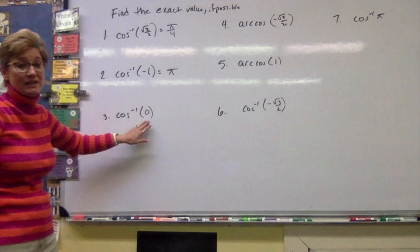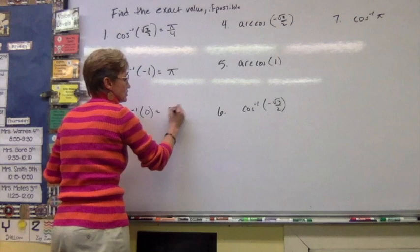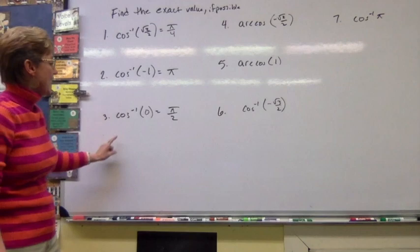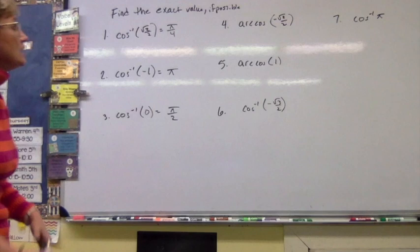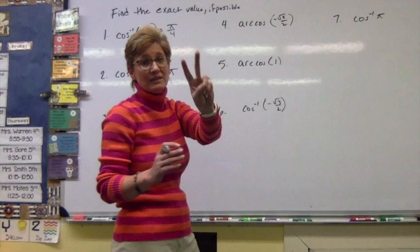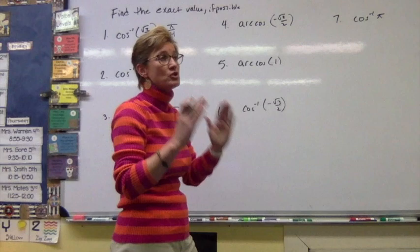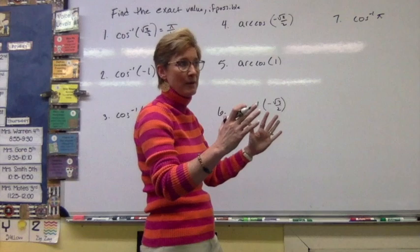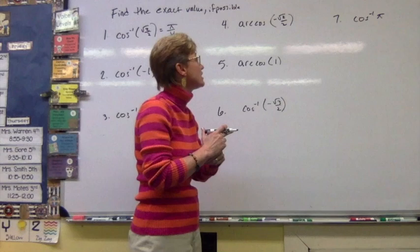Where is cosine equivalent to zero between zero and pi? That occurs at pi over two — what angle measurement has cosine equal to zero, and that angle must be between zero and pi. For number four, we have negative square root of two over two. That negative value tells me it's in the second quadrant, because inverse function angles must be between the first and second quadrant only, as we had to define our parameters so it would pass the horizontal line test.